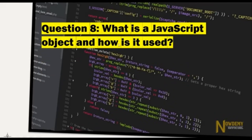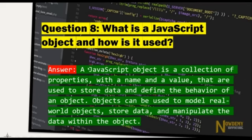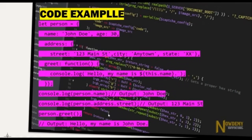Question number eight: What is a JavaScript object and how is it used? A JavaScript object is a collection of properties with a name and value that are used to store data and define the behavior of an object. Objects can be used to model real-world objects, store data, and manipulate the data within the object.